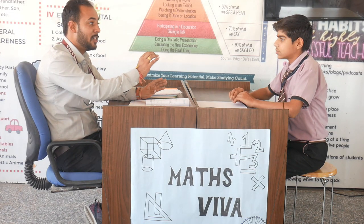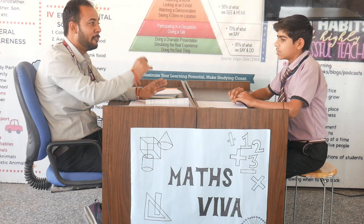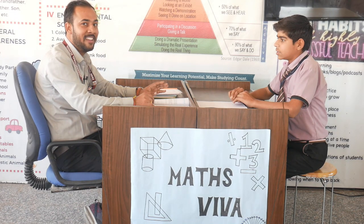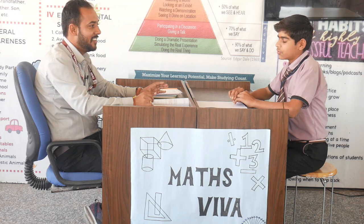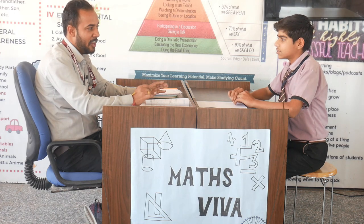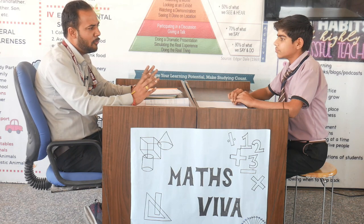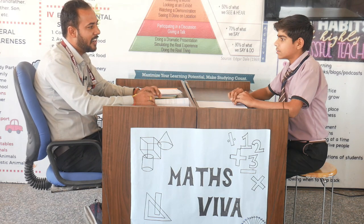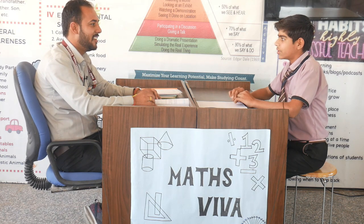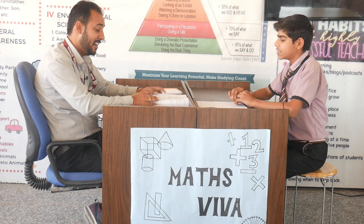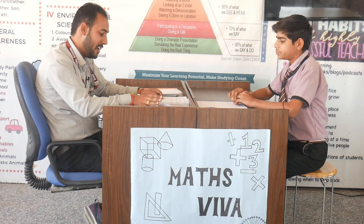What is the measure of each angle of an equilateral triangle? The measure of each angle is 60 degrees. Are you sure? Yes, all angles are 60 degrees. What is the sum of all three angles of a triangle? 180 degrees.